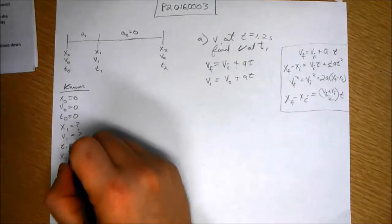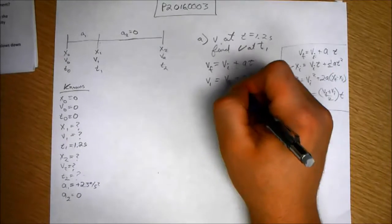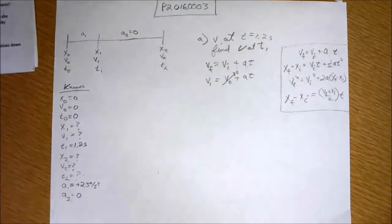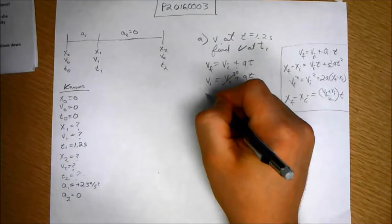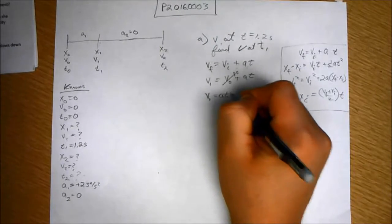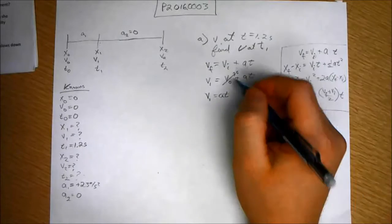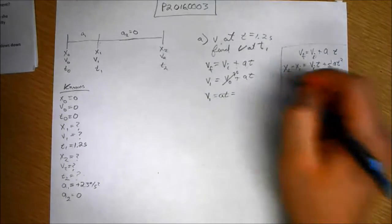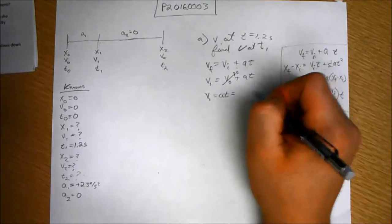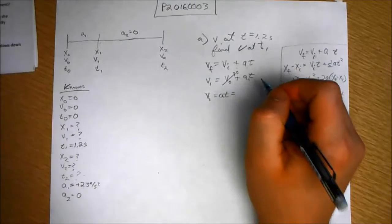We also know v0 equals 0 because she's starting from rest. So, v1 equals a t. And we can put numbers in if you want. v, a is equal to, that's actually a1t, excuse me, because I want to differentiate it from a2. I'll put a1 there.